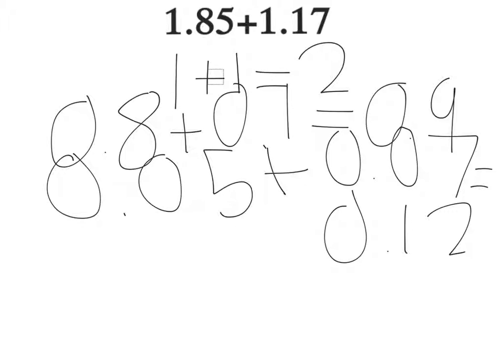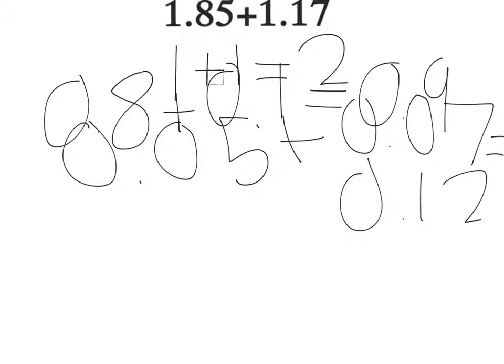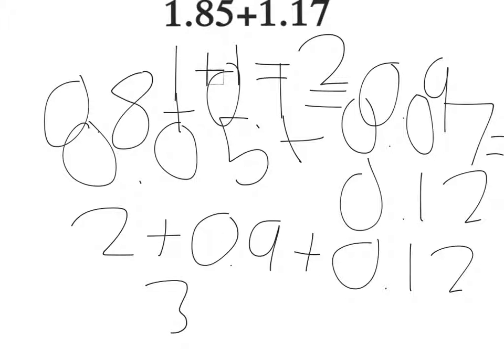Now finally, I need to add all of these sums together, which is 2 plus 9 tenths plus 12 hundredths, which all together is 3 and 2 hundredths, because I needed to carry some of the numbers.